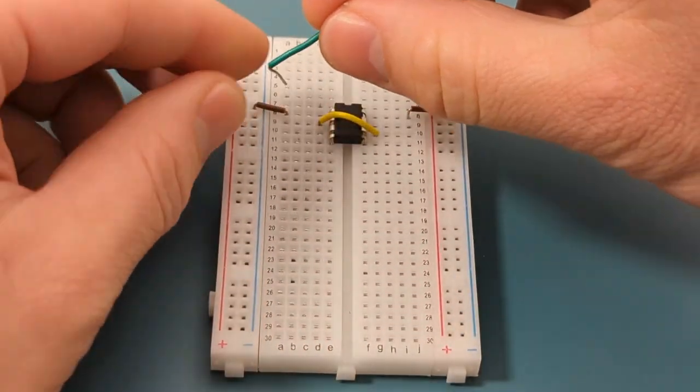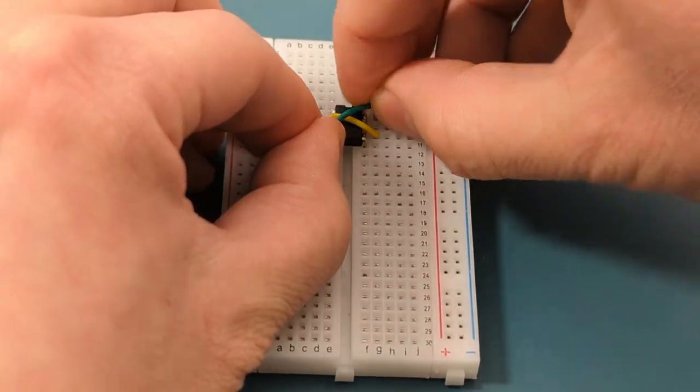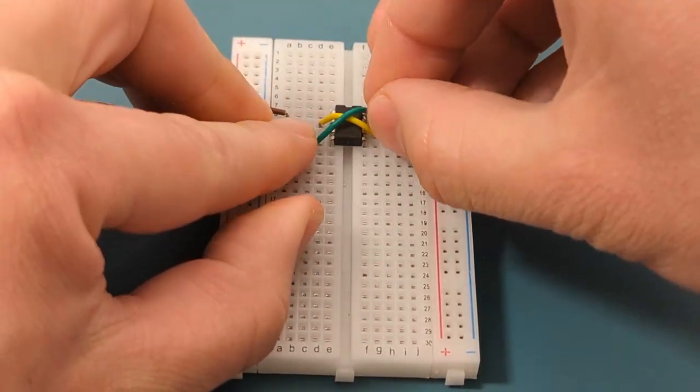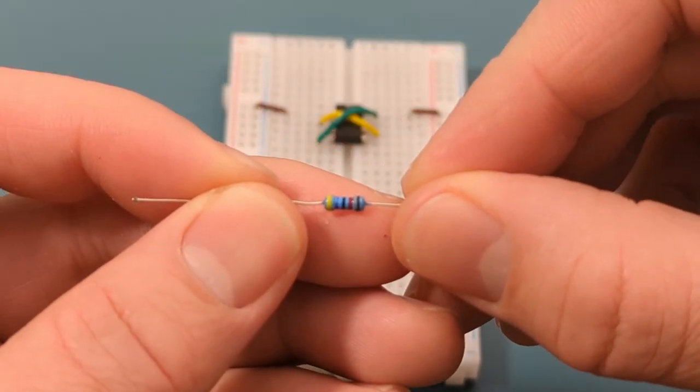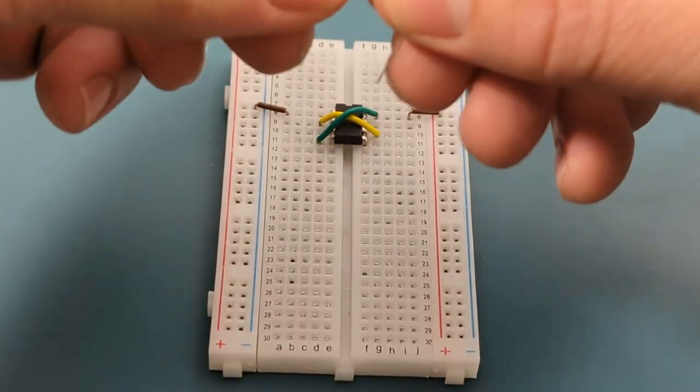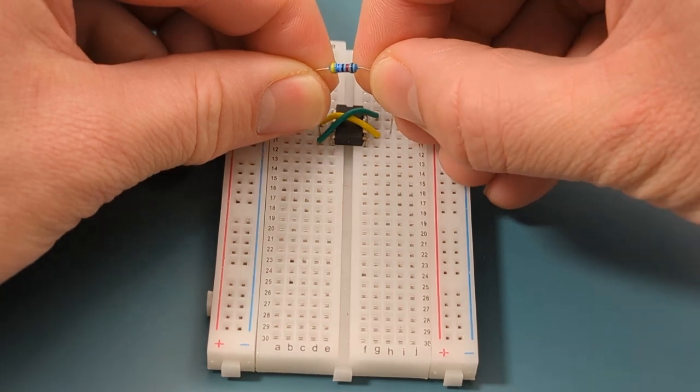Use a jumper wire to connect pin four or reset to pin eight or VCC. Bend the ends of a 47,000 ohms resistor. Insert the 47,000 ohms resistor to pin three, or output, and pin six or threshold.